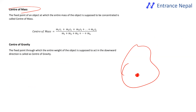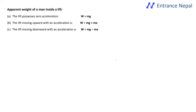The center of gravity is the point where all the gravitational force is assumed to be concentrated. For the apparent weight of a man inside a lift, the formula is: apparent weight = m(g ± a), depending on whether the lift accelerates up or down.